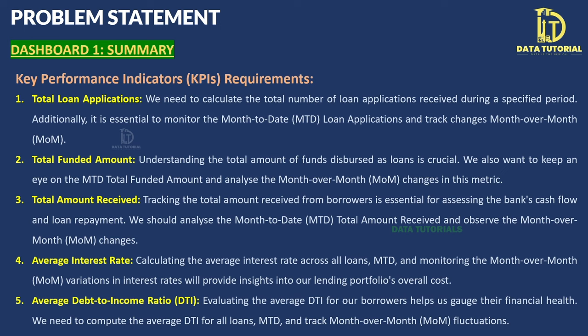The second KPI is total funded amount — how much loan amount was disbursed to customers — with month-to-date and MoM values. The third is total amount received — how much customers have repaid back to the bank, typically via monthly installments (EMI) — also with month-to-date and MoM. Fourth is the average interest rate charged to customers with MoM and month-to-date. Fifth is the Debt-to-Income (DTI) ratio, a measure of borrowers' financial health used by banks to decide whether to grant loans.